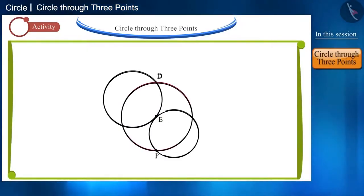You can see that the third point will always be either inside or outside the circle passing through two points. Therefore, we cannot draw a single circle passing through three collinear points.